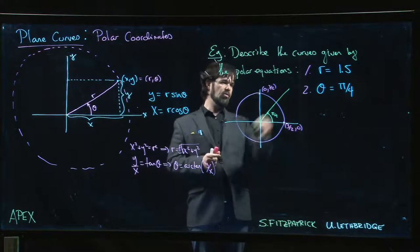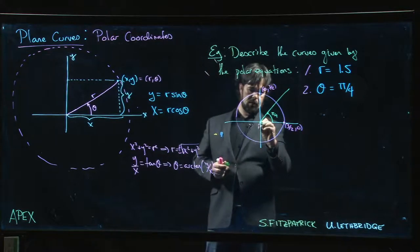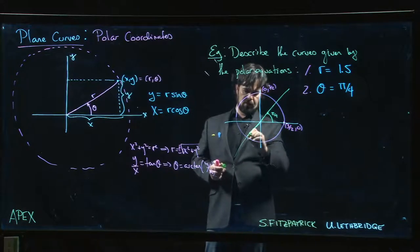We go the other way, opposite direction. So we actually get a line. Constant values for theta just give you a line through the origin.